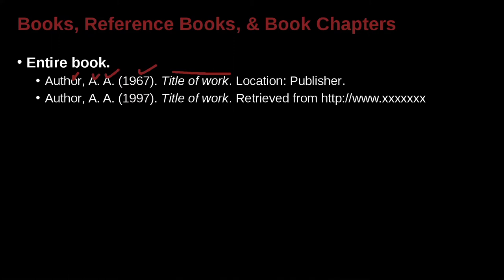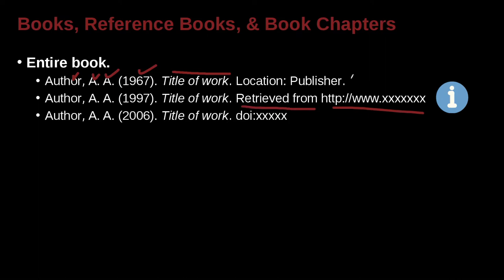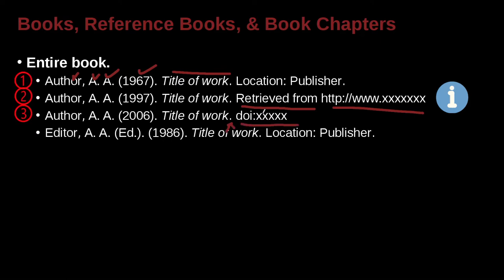Here's an example of an online citation using a URL. It's very similar, only instead of a location and publisher, we have the words 'retrieved from' followed by the URL. Another way to do this is the same approach, but at the end we add DOI — the document object identifier — instead. So there are three different ways you can do that.